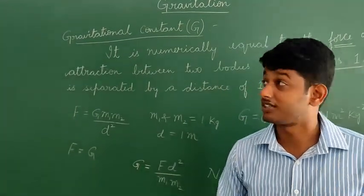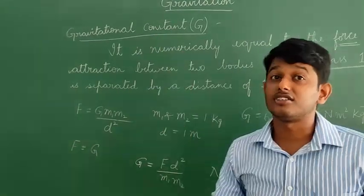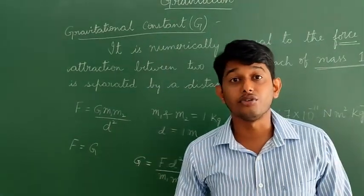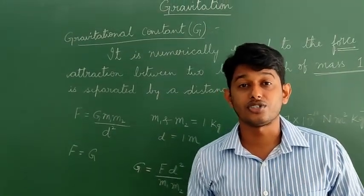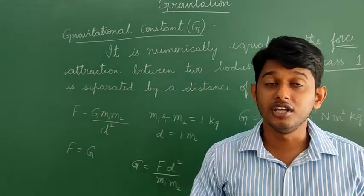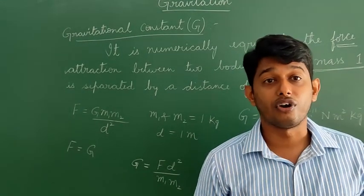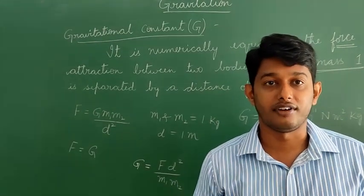G is also called the universal gravitational constant, and Newton's law of gravitation is also called the universal law of gravitation. Remember this.